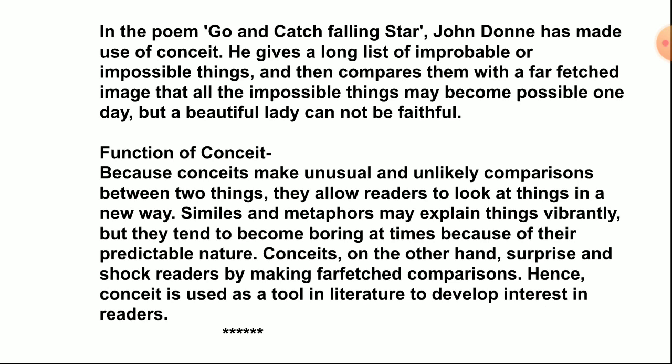In the poem 'Go and Catch a Falling Star,' John Donne also makes use of conceit. He gives a long list of improbable or impossible things and then compares them with a far-fetched image — that all the impossible things may become possible one day, but a beautiful lady cannot be faithful. Although the comparison is very dissimilar or unlikely, John Donne has tried to make it compatible.